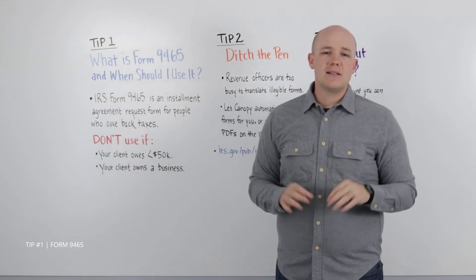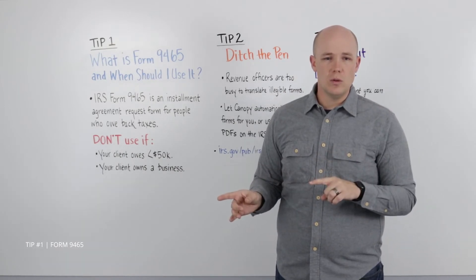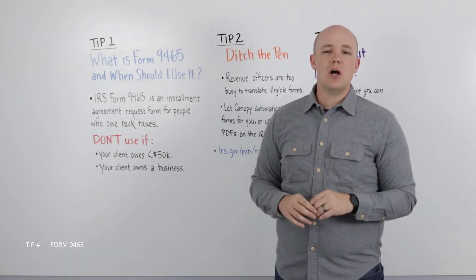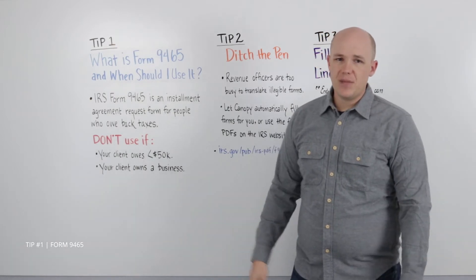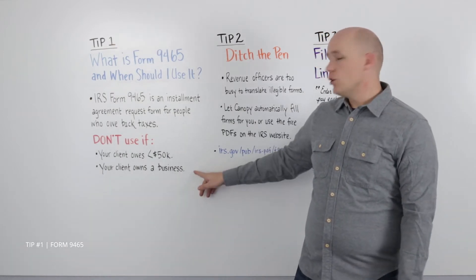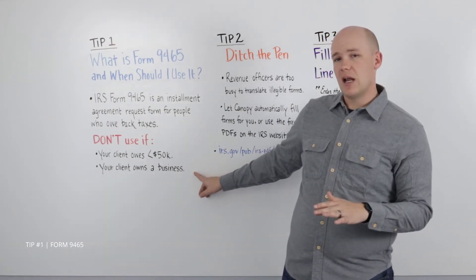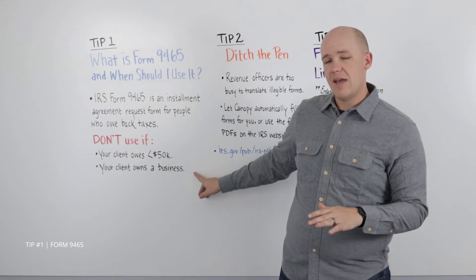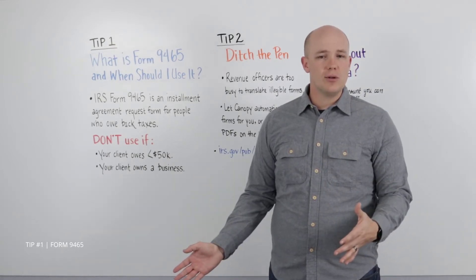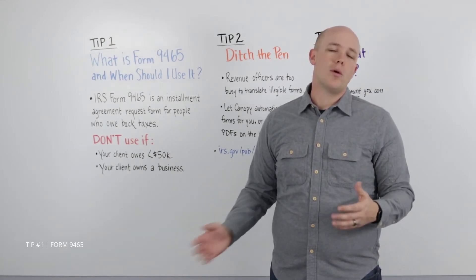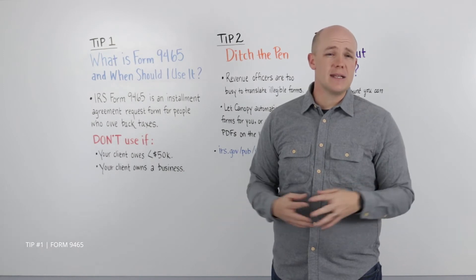Instead, use the IRS's Online Payment Agreement Tool, sometimes called OPA, for a faster, smoother experience. If your client currently owns a business, don't use the 9465. Potential complications such as overdue payroll taxes are more than the 9465 is designed to handle.